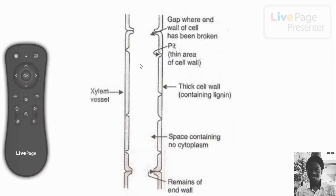A xylem vessel can be very long — for instance, running from the roots of a coconut tree to its branches in a single xylem vessel. It serves both transport and support functions, and xylem vessels carry materials in one direction only, from roots to leaves — that is, unidirectional transport.